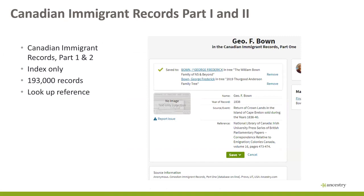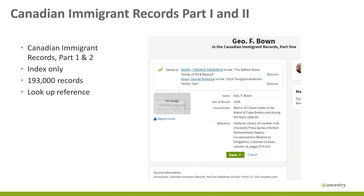Another immigrant collection compiled from a variety of sources covers records between 1780 and 1906 relating to immigrants to Canada. You're going to find the name of the immigrant, the year, and the source of the original records — they're not complete transcriptions of those original records, so you have to go and find the full information.